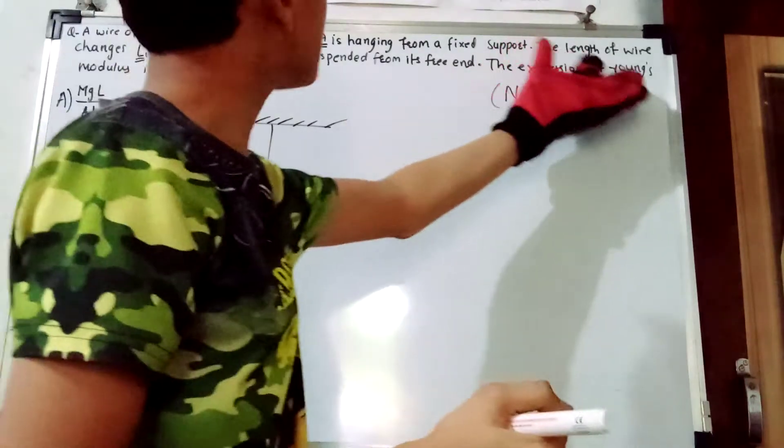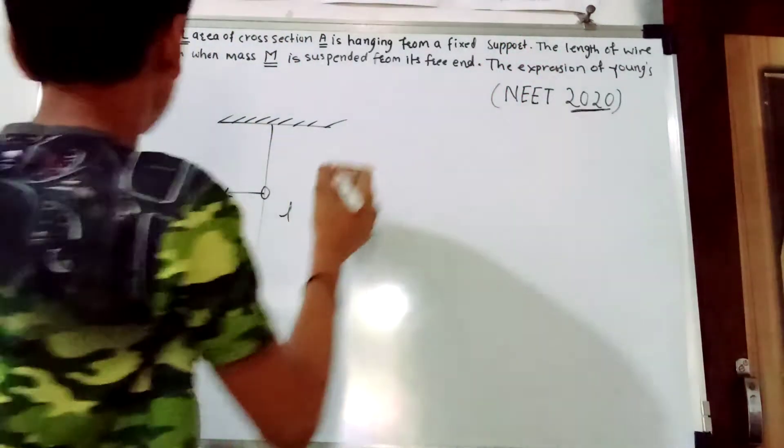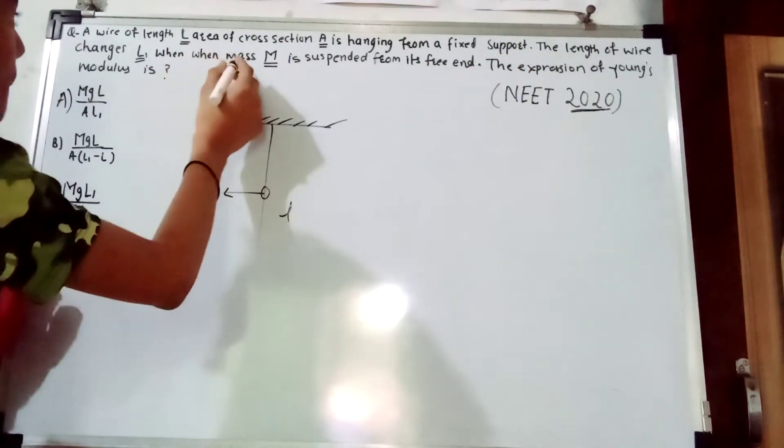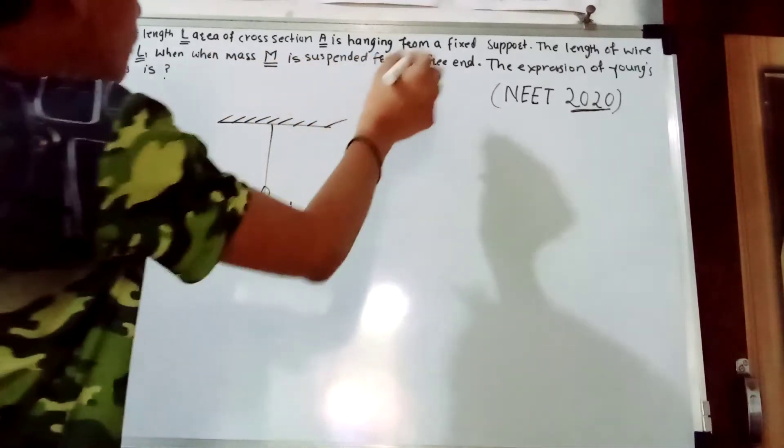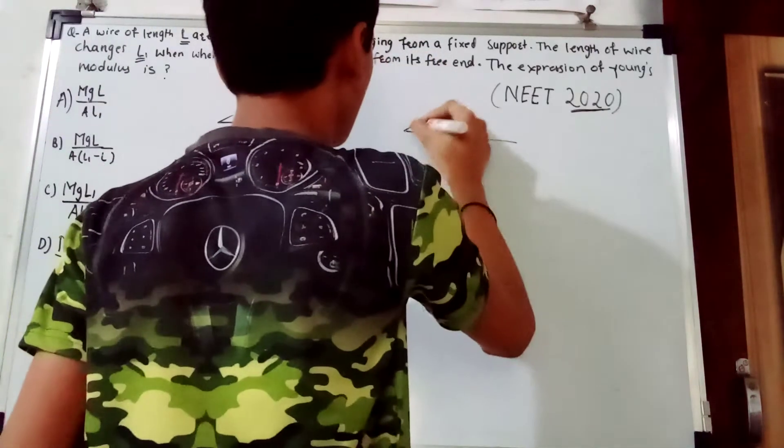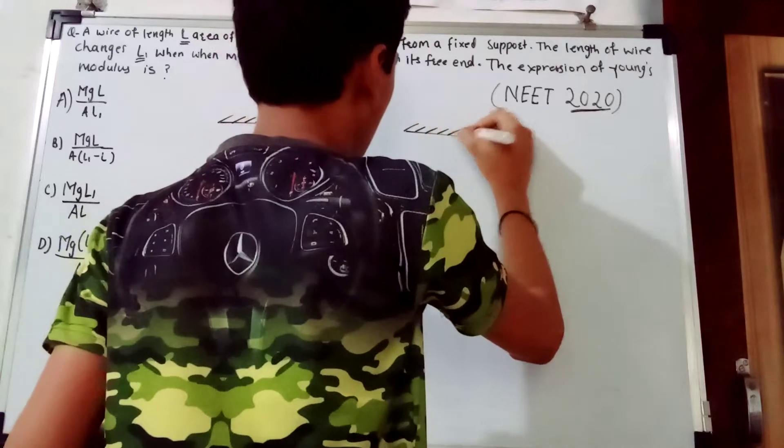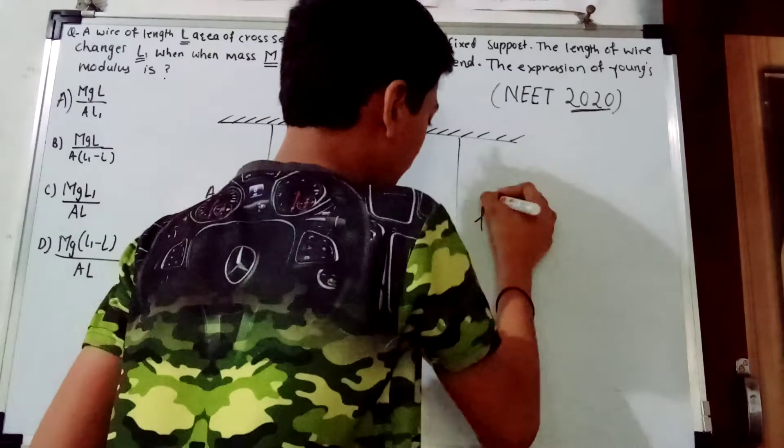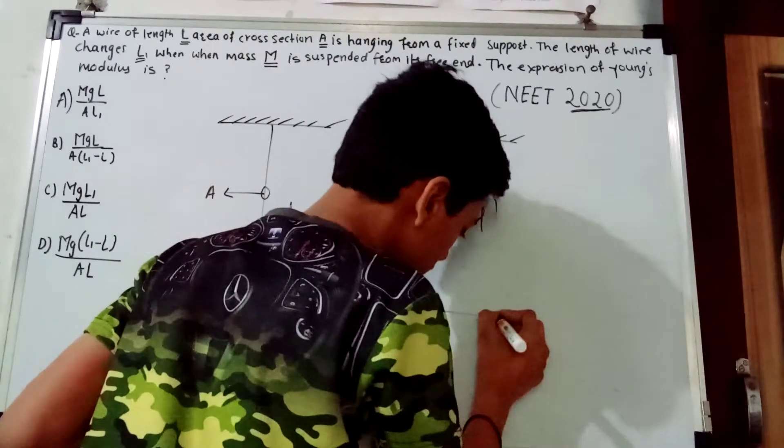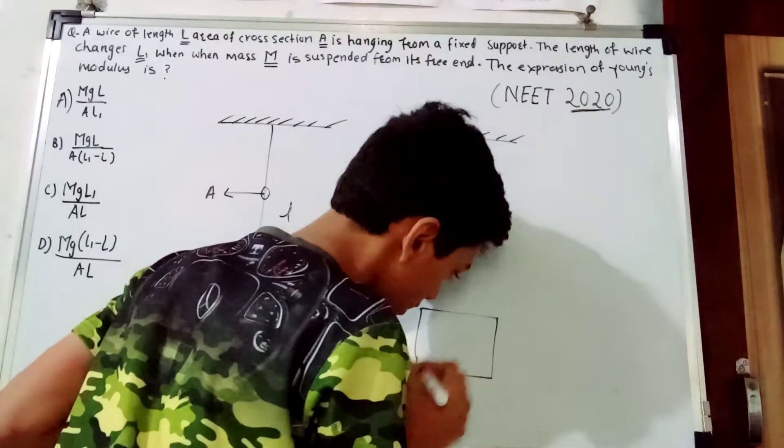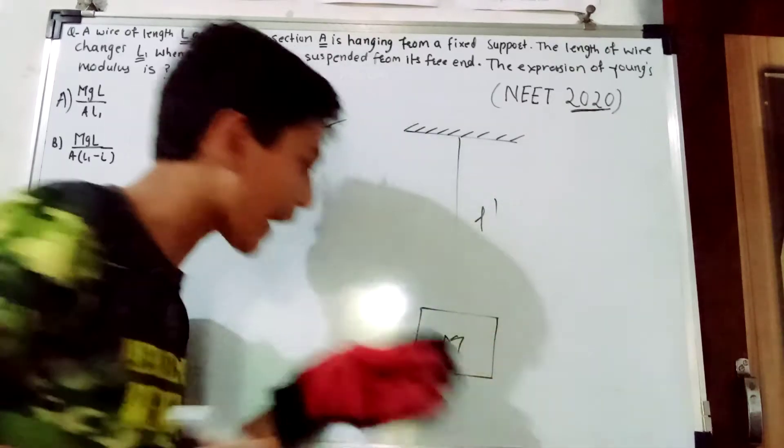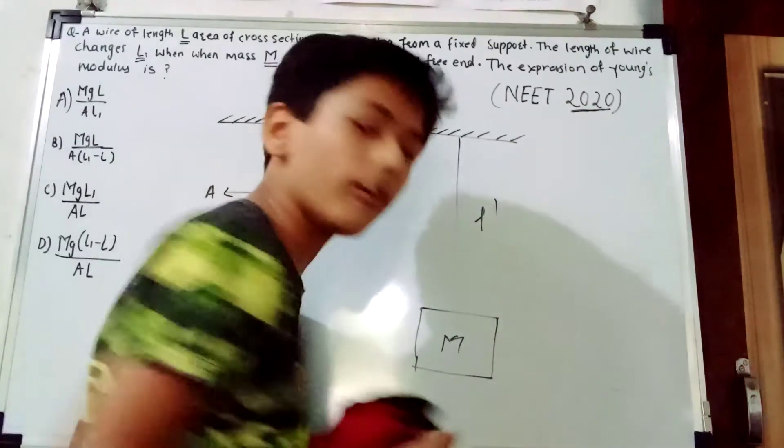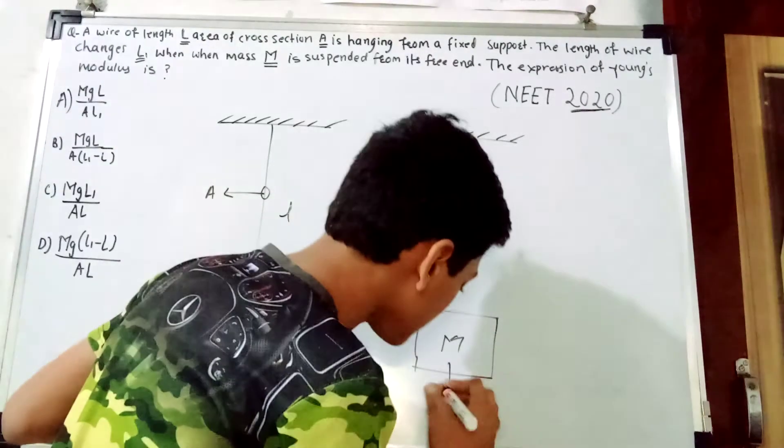The length of the wire changes to L' when mass M is suspended from its free end. This is the L' when mass M is suspended at its free end, and this is acting downward, that is the weight Mg.